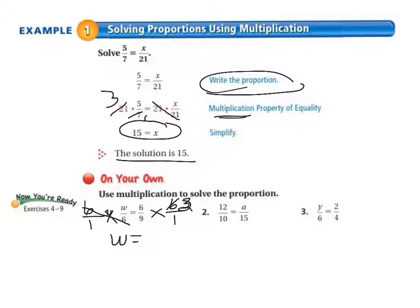We can cross cancel. 3 goes into 6 two times and 3 goes into 9 three times. 6 times 2 equals 12 and 3 times 1 equals 3. So w equals 12 divided by 3, which equals 4.